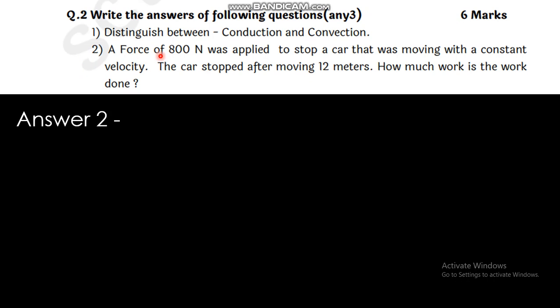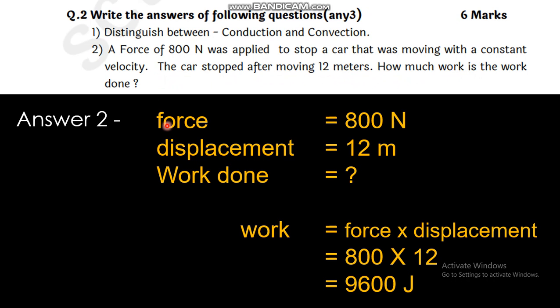Question Number 2: A force of 800 N was applied to stop a car that was moving with a constant velocity. The car stopped after moving 12 meters. How much work is the work done then? While studying we know that force is - let's see the given part. Given is force 800 N.